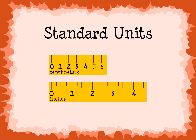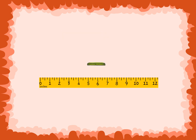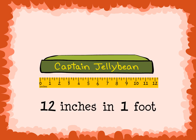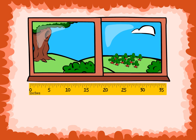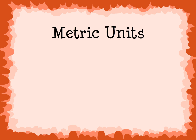A paper clip is about one inch long. A storybook is about a foot long. There are twelve inches in one foot. A window is about one yard wide. There are three feet in one yard and thirty-six inches in one yard.